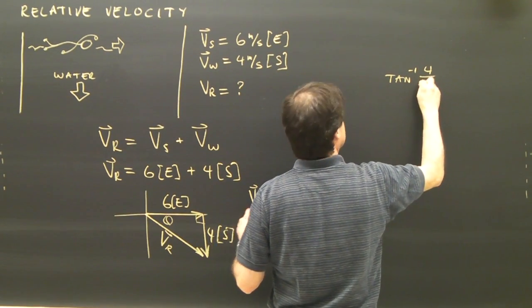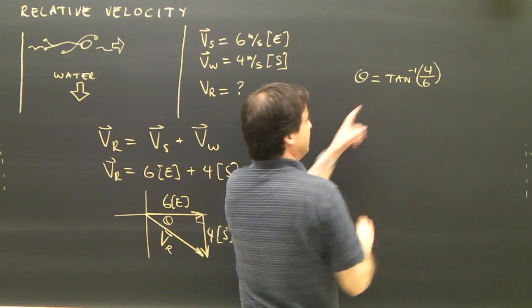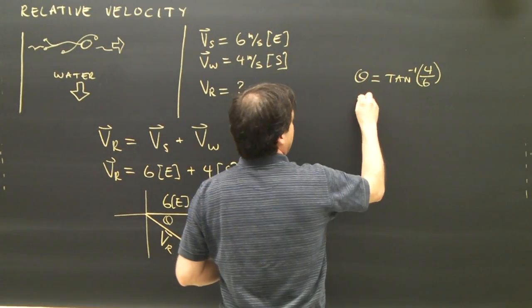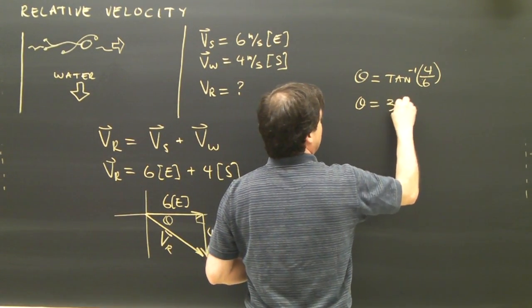Opposite over adjacent. The angle is going to be the inverse tangent of that. So my angle works out to be 34 degrees.